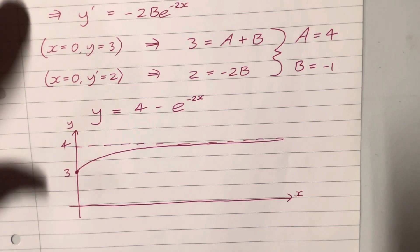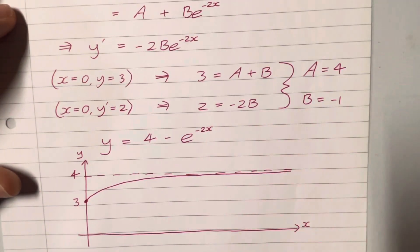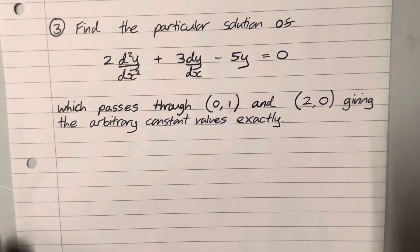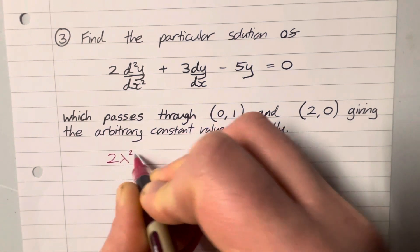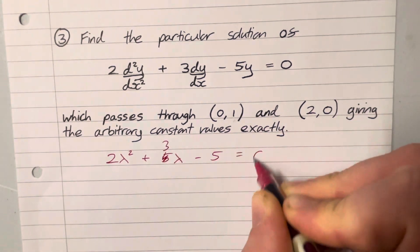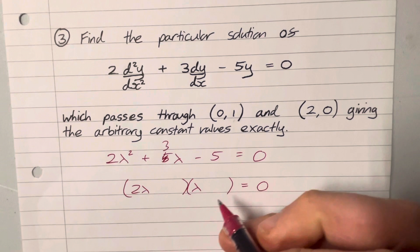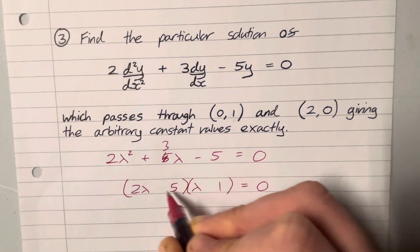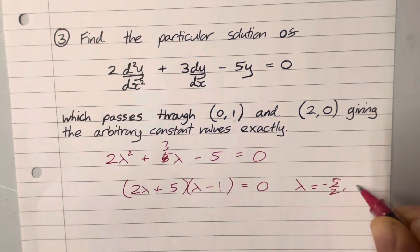If you have a GDC you can plug that in and copy from the screen, but it's good practice to sketch curves anyway. Example three — find the particular solution of this differential equation. We jump from the differential equation to the auxiliary equation. We're back to y as a function of x. We'll end up with 2 lambda and a lambda, needing a 1 and a 5 to make a 3.